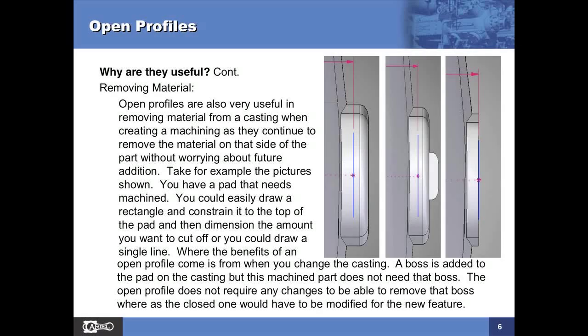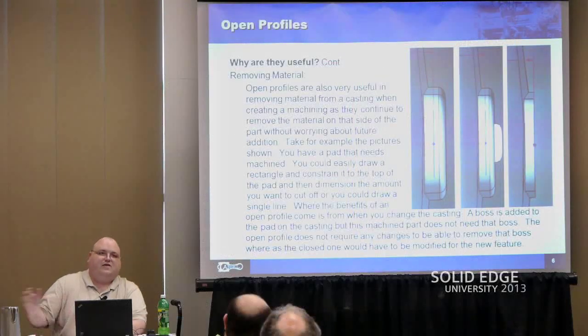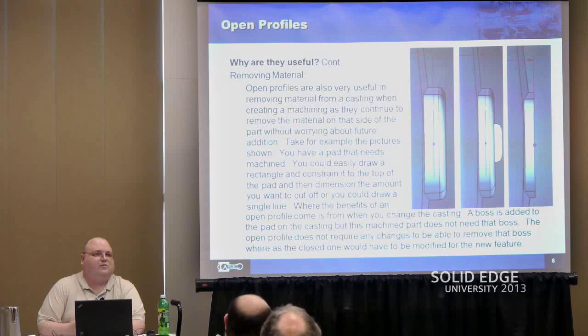As shown in the example with three pictures: on the left is an open profile of a single line used to machine off a pad. If a casting change added a boss on the side and the original profile was a closed rectangle, it would have left that cast boss sitting out in space when the machining updated. But by using an open profile, it cuts away all the material in that direction until it's beyond the material. It's basically like using 'through next' for your extrusion extents.